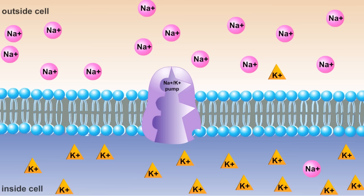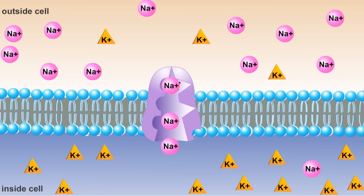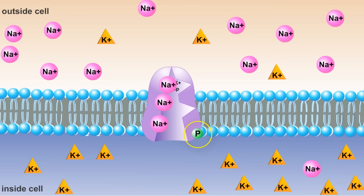The sodium-potassium pump has binding sites for three sodium and two potassium ions. After three sodium ions are positioned within the carrier protein, an ATP molecule is split, releasing phosphate.